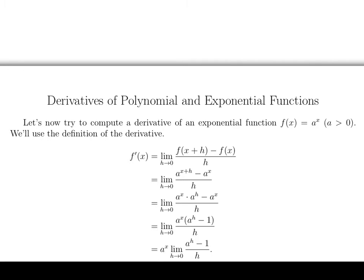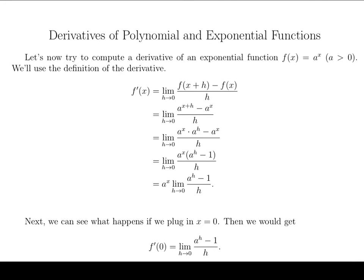Now we don't really know whether or not this limit exists, so let's think about that for a moment. What I'd like to do is just plug in x equals zero. So on the left hand side, it just turns into f prime of zero. And then on the right hand side, this term turns into one because a to the zero is just one. And then we're just left with this limit.